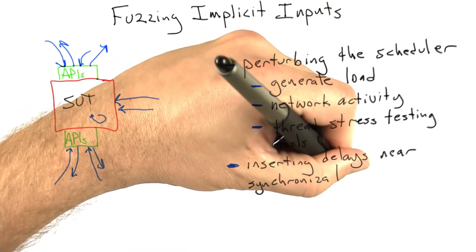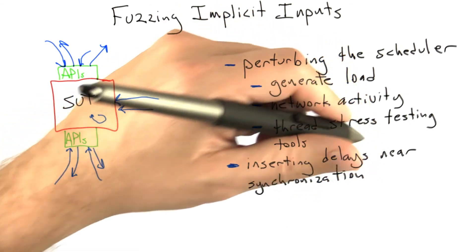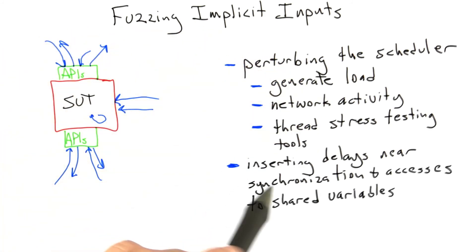One way to do that is to insert delays before and after acquiring locks, and also around accesses to shared variables. This entails a fairly high cost and isn't so easy, but it might be useful.